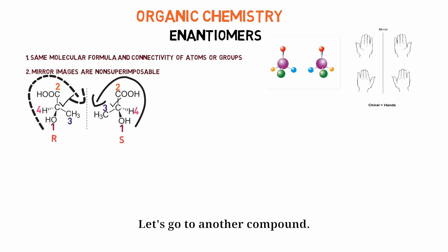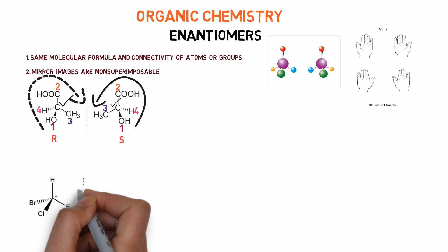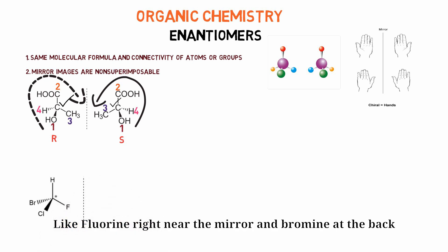Let's go to another compound. We draw the mirror image like the previous way, like fluorine right near the mirror and bromine at the back, like you'd see this image in a mirror. So we determine the configuration now.